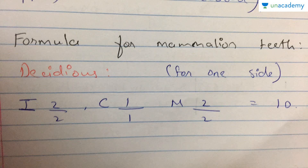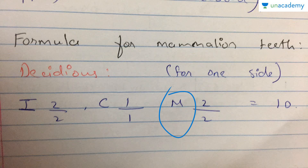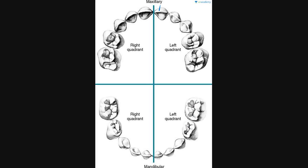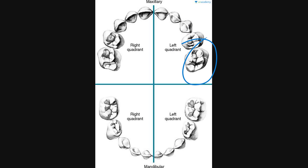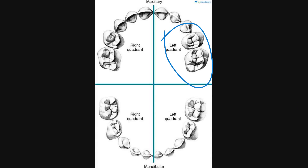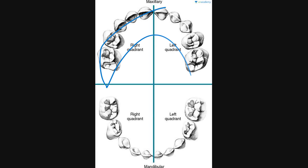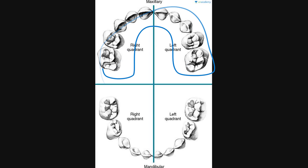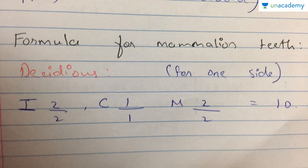Here is the formula you have to remember for deciduous teeth: I stands for incisor, C for canine, and M for molars. In one quadrant there are two incisors, one canine, and two molars — so the formula is I 2/2, C 1/1, M 2/2. That gives five teeth per quadrant: five in the upper quadrant and five in the lower, giving ten up and ten down, for a total of twenty deciduous teeth.